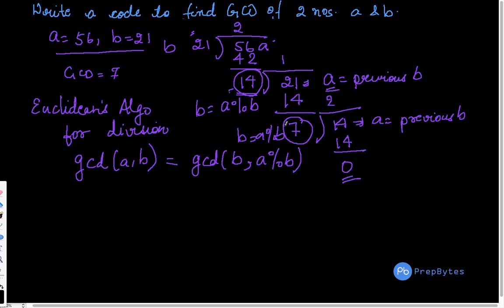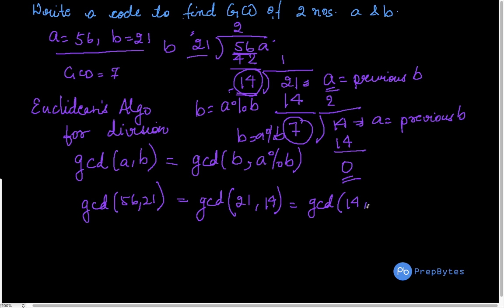So if we have to calculate GCD of 56 comma 21, then we can write that GCD of 56, 21 is equivalent to GCD of 21, 14 which is equivalent to GCD of 14, 7 which is equivalent to GCD of 7, 0.